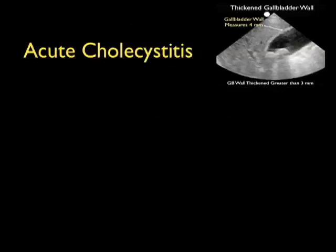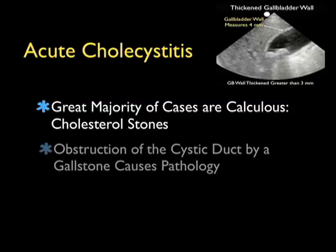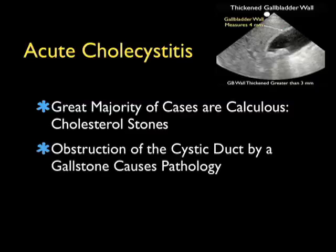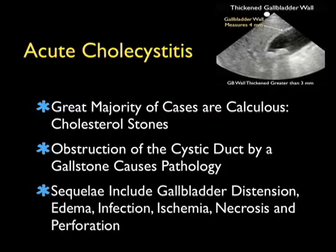The majority of cases of acute cholecystitis that present to the emergency department are going to be calculus, or associated with cholesterol gallstones. While acalculus cholecystitis does exist, it's rarely seen in the emergency department — usually seen in patients who have been hospitalized, those who have had surgery recently, or those who have immunocompromised states such as HIV or diabetes.